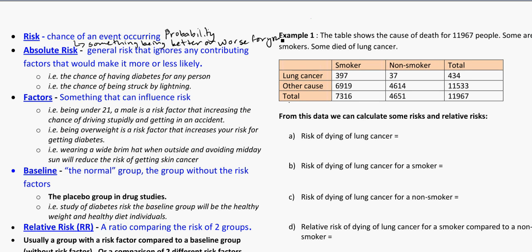Now absolute risk. This is basically just a general risk that ignores any contributing factors that would make something more or less likely to happen — so this is just down to your basic probability. A factor would be something like the chance of having diabetes for any person on the planet, or the chance of being struck by lightning, again for anybody. So absolute risk is for anyone.